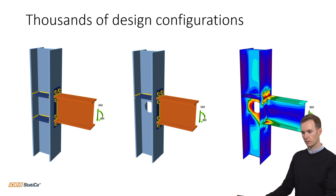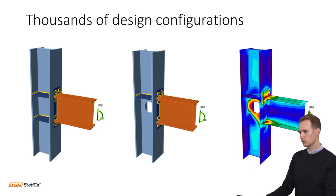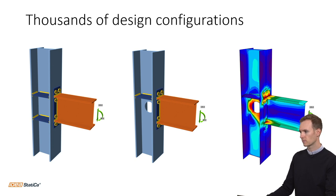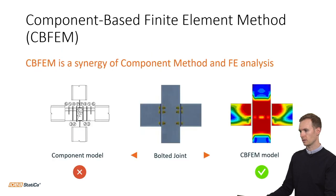You can configure any type of connection and optimize it quickly by editing and running the code check straight away to see if utilization is within the standard requirements. It's easy to switch out stiffeners, add openings, remove bolts, welds, cuts and so on, then run the analysis again until you are satisfied.